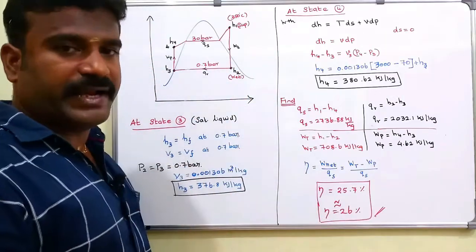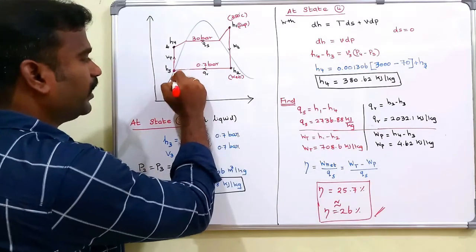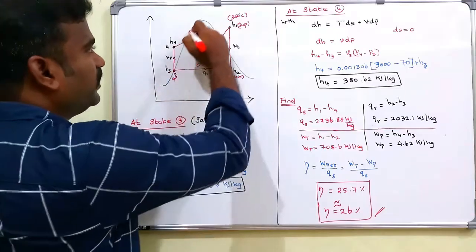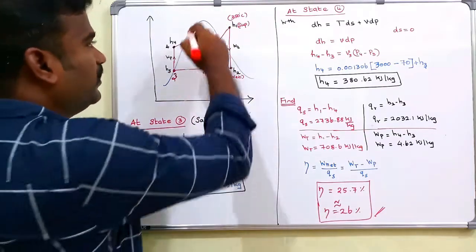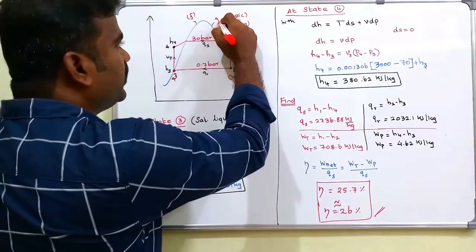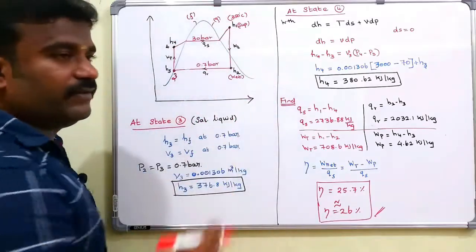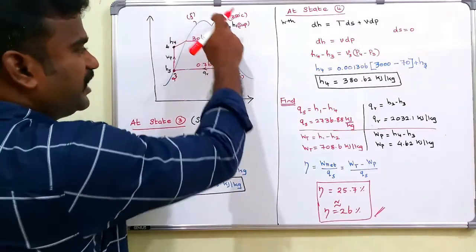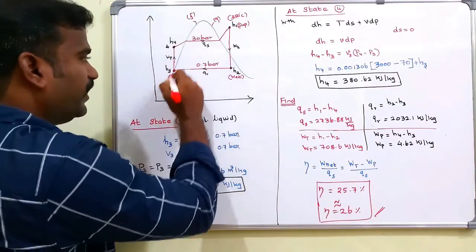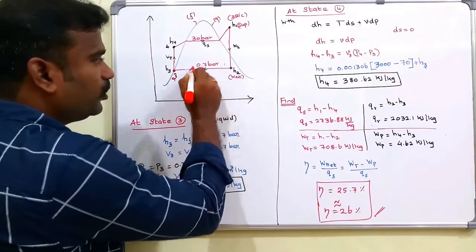Now we find the enthalpy at state 3. State 3 is where the process line touches the saturated liquid line - that is point F. The saturated liquid and saturated vapor lines define the wet region. At 0.7 bar, H3 equals HF, the specific enthalpy of saturated liquid.